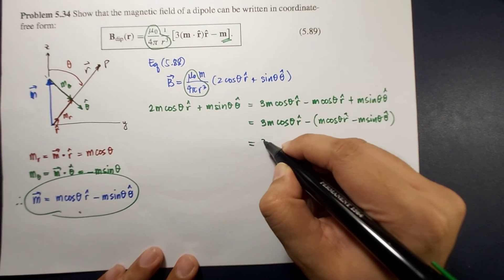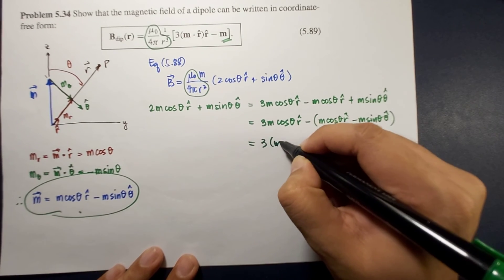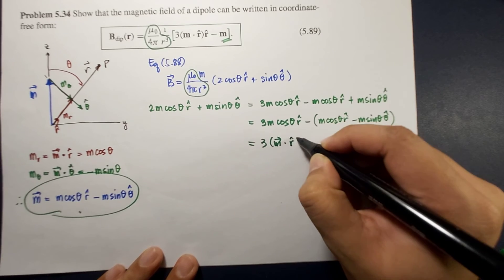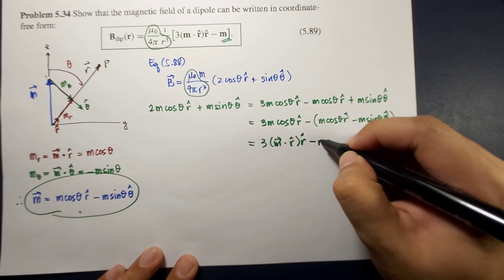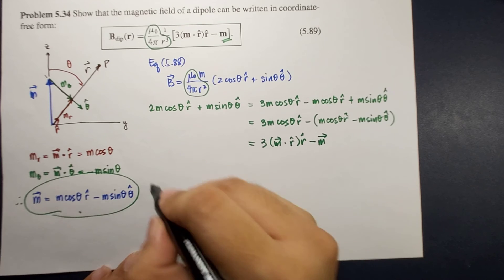So this is 3 times m dot r hat r hat minus m vector. So therefore,